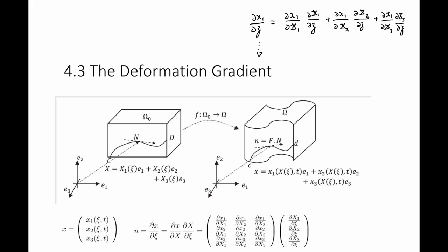After doing this, if I take these components together, I can form a matrix equation where the new tangent n is equal to this matrix multiplied by a vector, and that vector is actually the original tangent N. So the new tangent n is equal to a matrix F multiplied by the original tangent N.